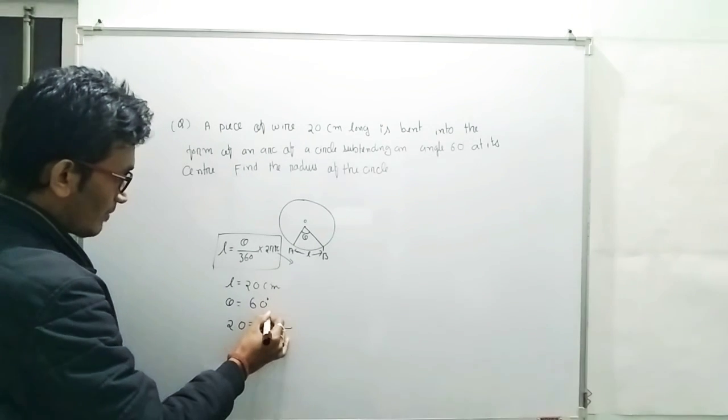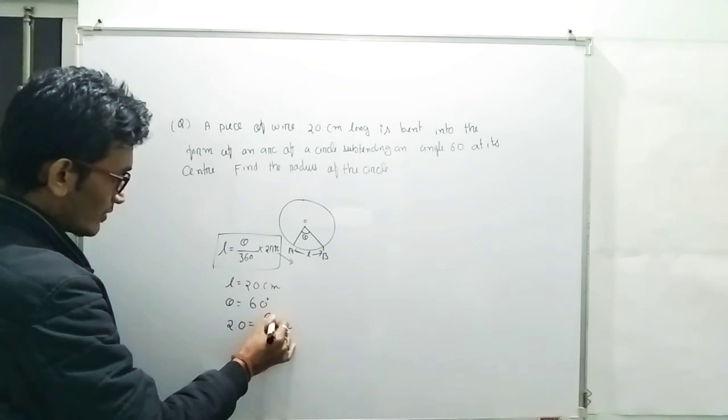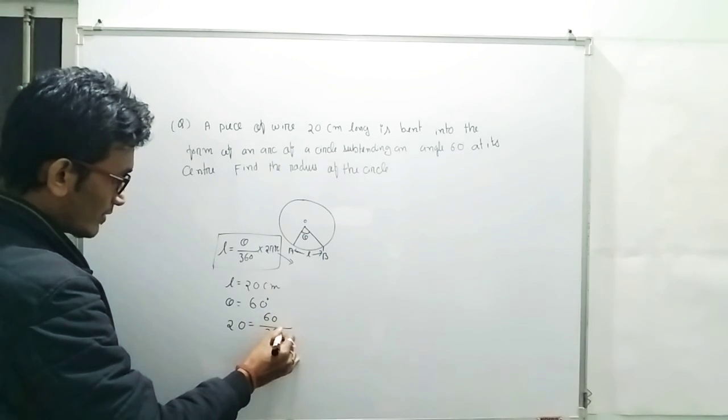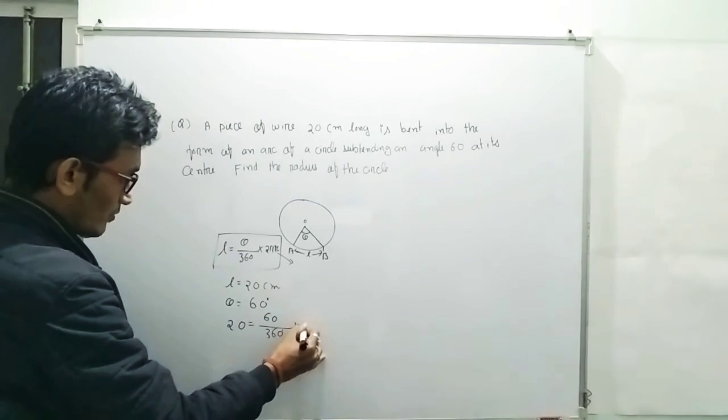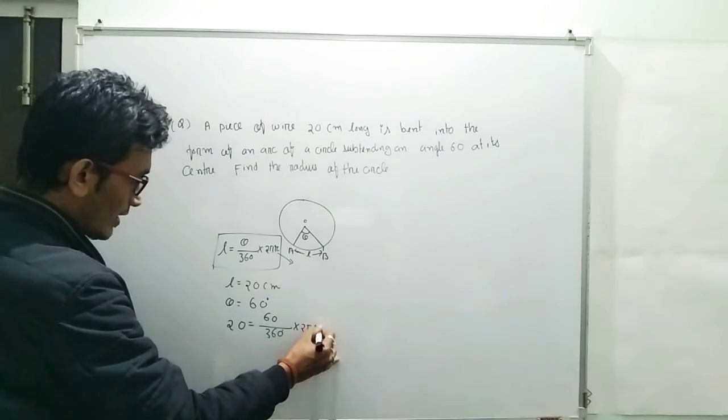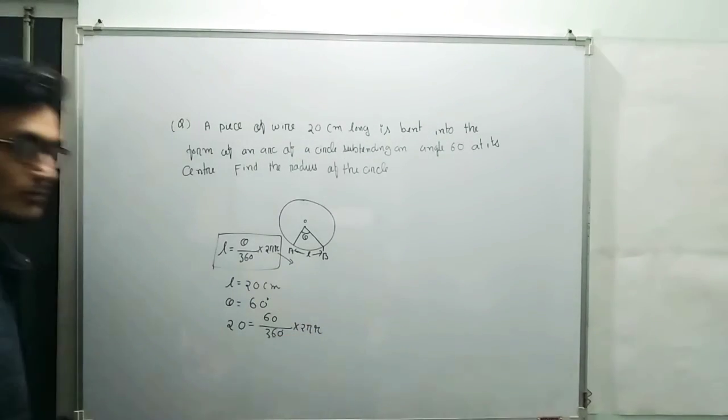20 equals theta by 360 degree, so 60 degree divided by 360 degree into 2 pi r. So this r we have to find out.